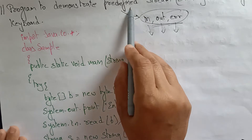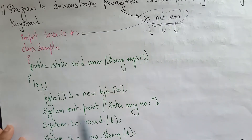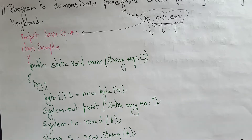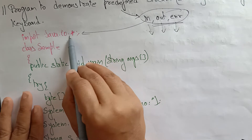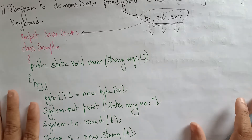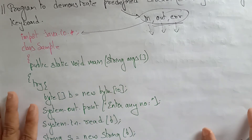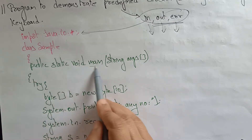The predefined streams are present in the java.io.* package and java.lang package. I am using java.lang.System package. I am mentioning .* so that I can use all the methods, constructors, and classes that come under this package. A class sample is loaded, opened, executed, and the main method is called.